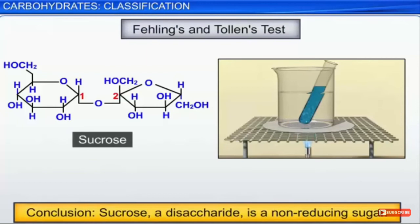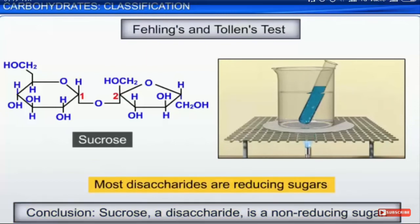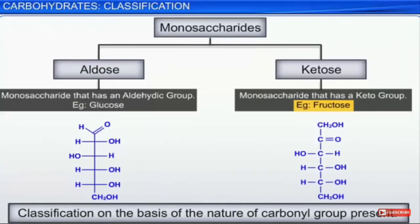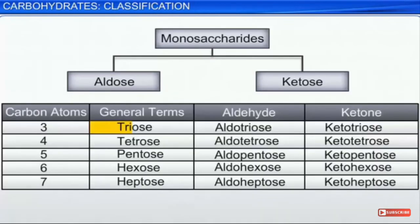As a conclusion: sucrose is a disaccharide, but it is a non-reducing sugar — it does not give the Fehling's test. Disaccharides are generally reducing sugars, but sucrose is the one disaccharide that is still a non-reducing sugar. For naming monosaccharides, the name depends on which functional group is present — aldose or ketose.